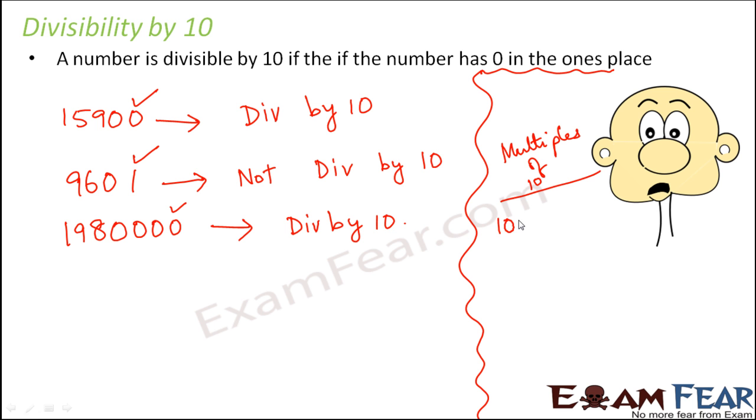If you start writing the multiples of 10, it would be something like this. 10×1 is 10, 10×2 is 20, 10×3 is 30, 10×4 is 40 and so on. As you keep writing the multiples, everywhere you would see that there is a 0 at its unit space.